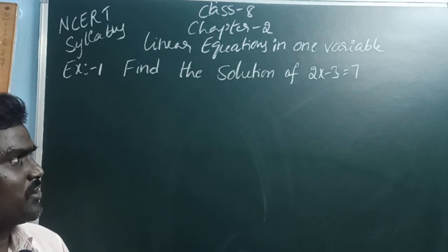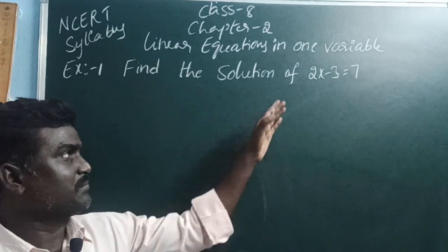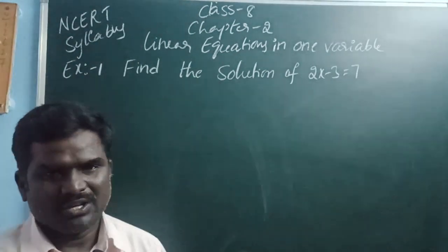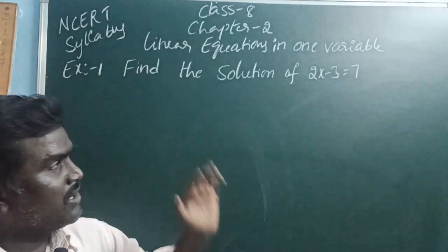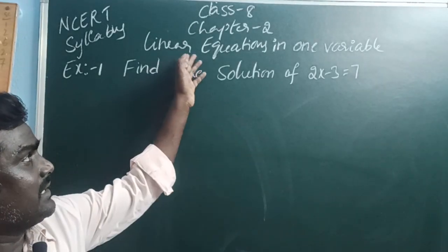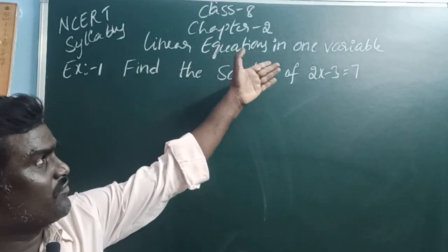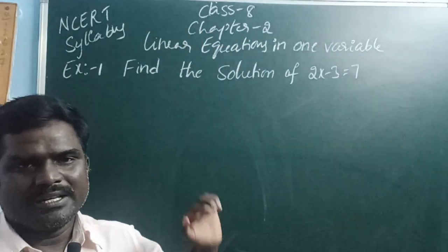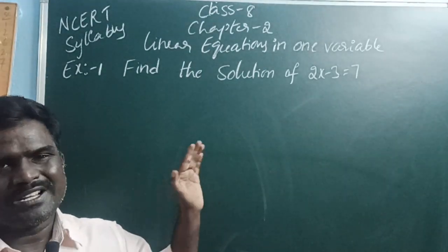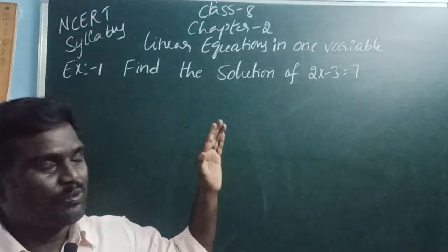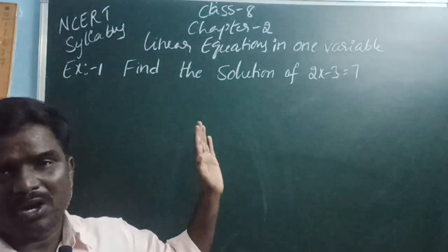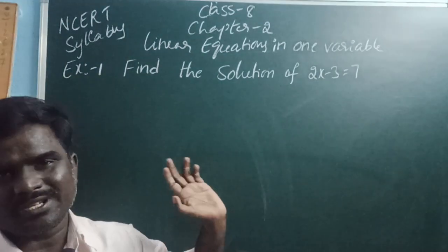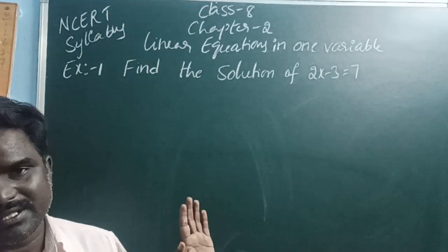Example 1: Find the solution of 2x minus 3 is equal to 7. In the last video, I explained the linear equation in one variable introduction topic — what is called the equation, what is called linear equation, what is the variable, what is the solution, and what are the zeros or roots of linear equations.